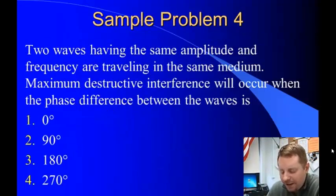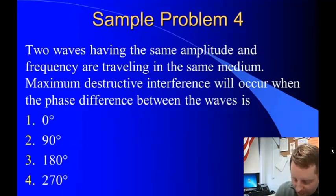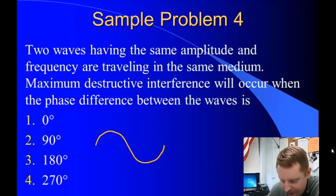Here's another one. Two waves having the same amplitude and frequency are traveling in the same medium. We'll get the maximum destructive interference when the phase difference between the waves is 0, 90, 180, or 270 degrees. Well, let's draw a wave front here. And remember that if two objects are in phase, it's the same point on consecutive waves.